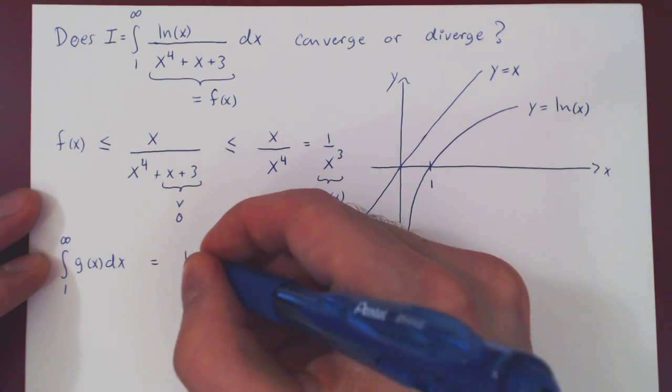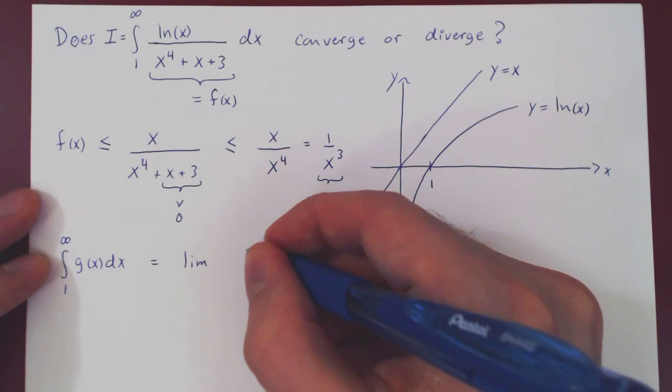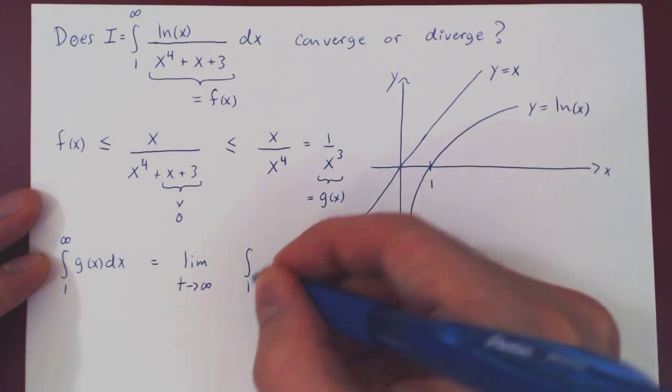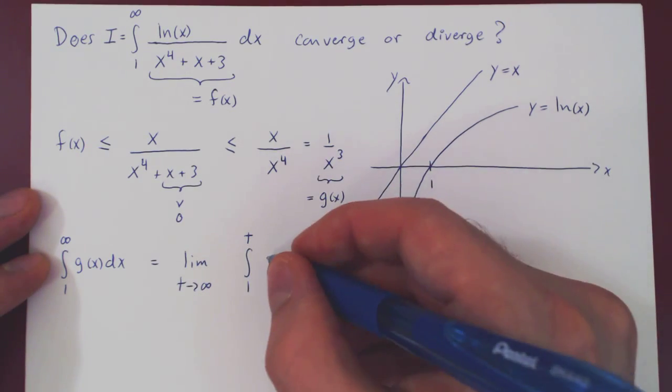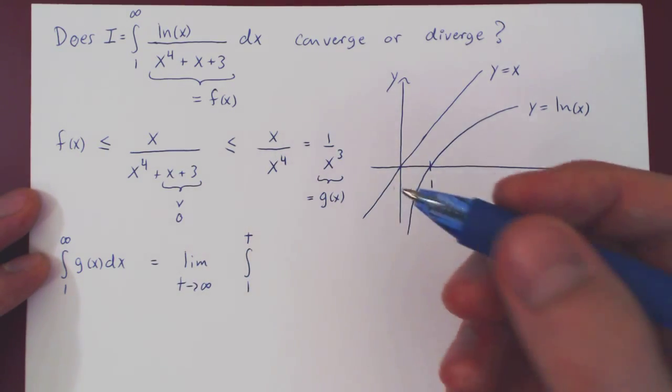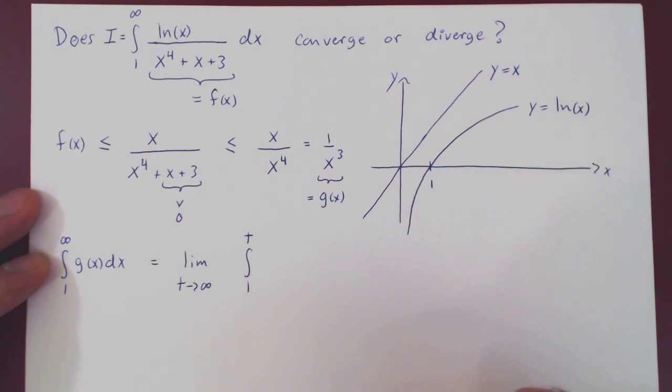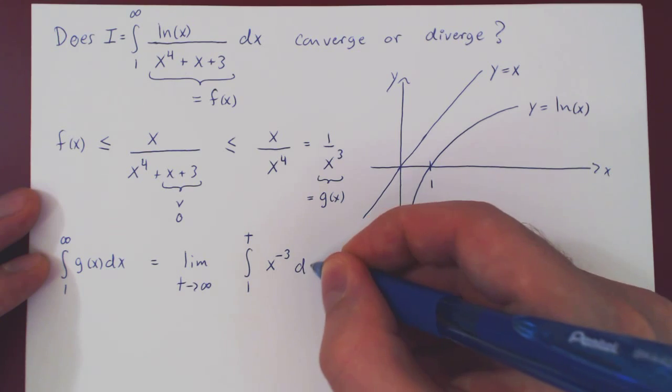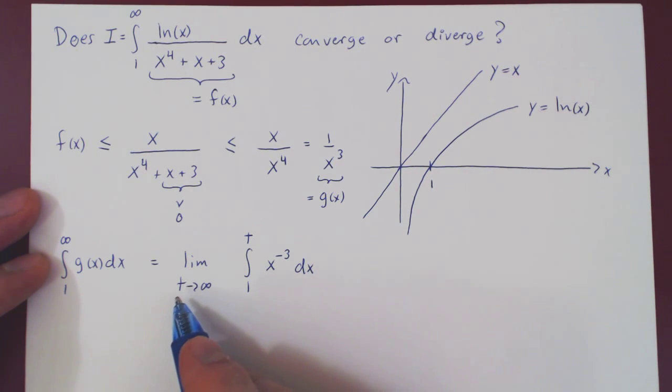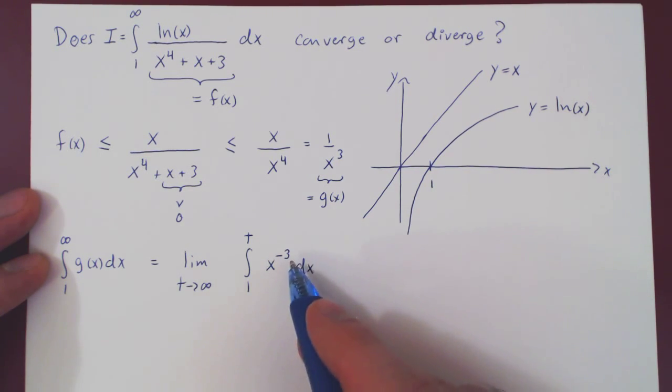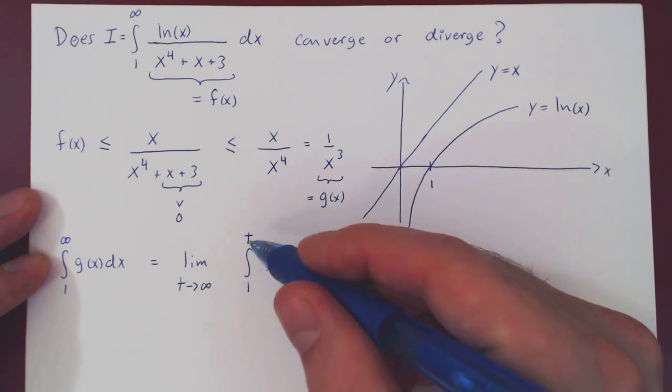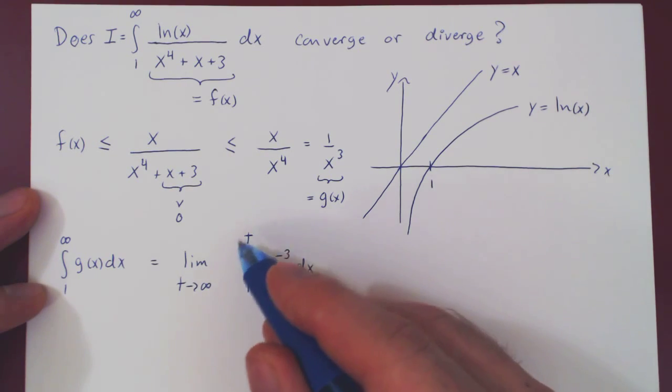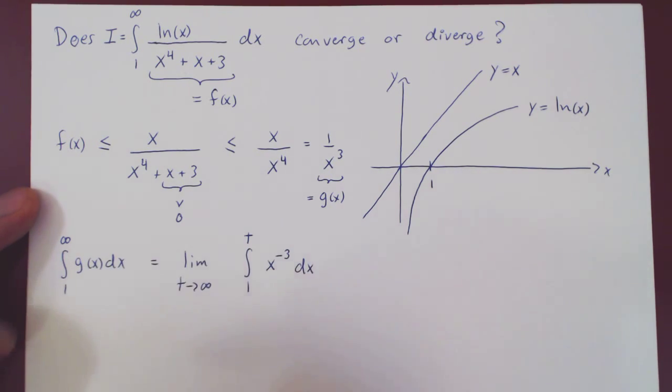Well again, we will let t approach infinity, and integrate from 1 to t. And our g is 1 over x cubed, which thinking of integration and derivative, we will rewrite as x to the negative 3. And of course, now that we have a continuous function, over a finite interval, we can use the fundamental theorem of calculus. And clearly as t goes to infinity, we get the improper integral.